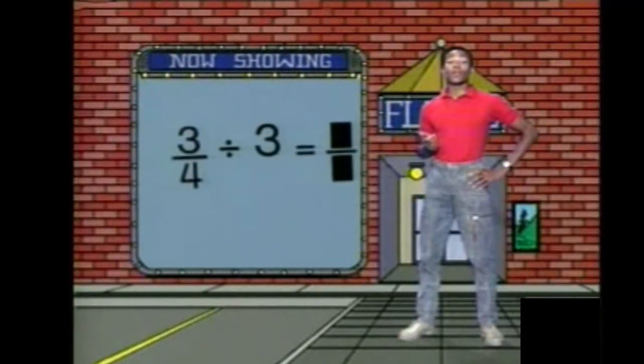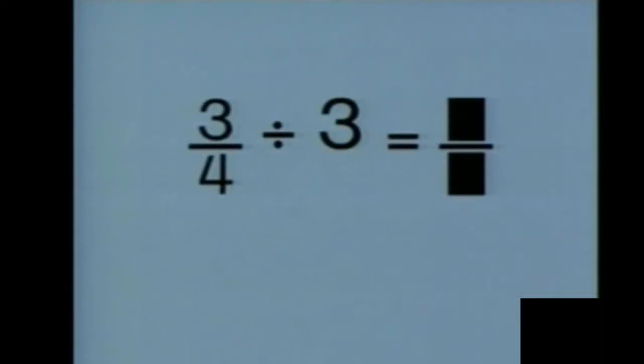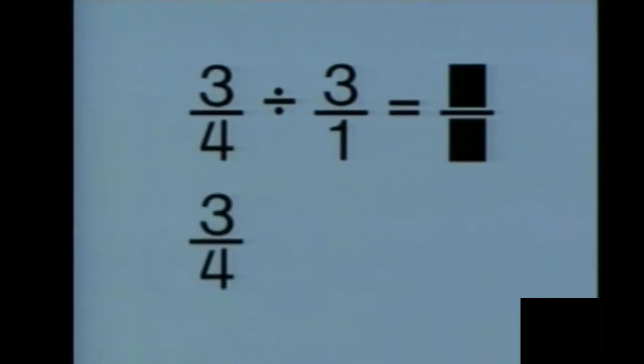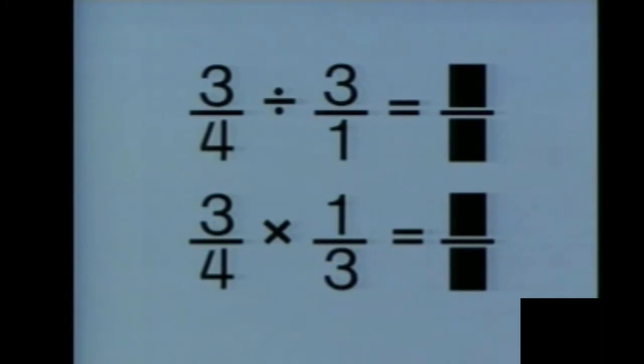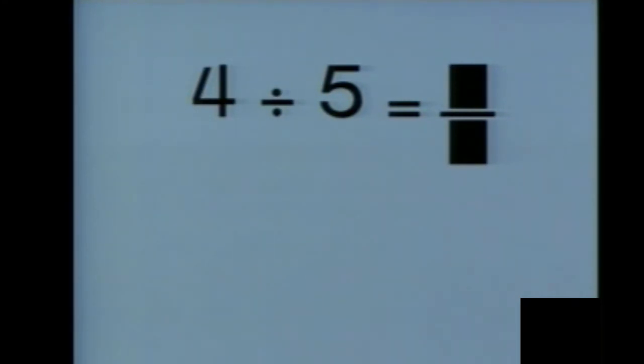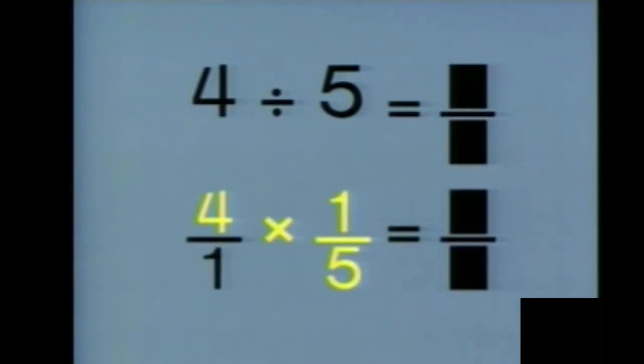Let's review dividing fractions. What are we dividing by in this problem? Yes, three. Dividing by three, or three over one, is the same as multiplying three fourths by one third. Here's four divided by five — that's the same as four times one fifth.